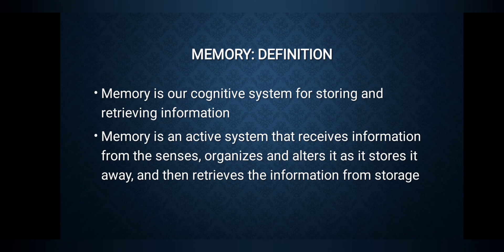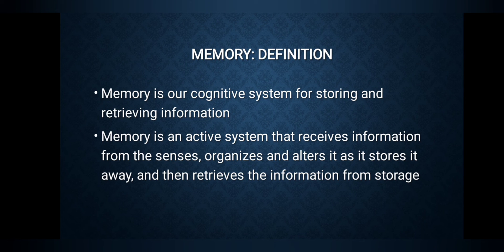Memory is our cognitive system for storing and retrieving information. It is an active system that receives information from the senses, organizes and alters it as it stores it away, and then retrieves the information from storage. We receive information from the sensory receptors and sensations, organize it, and store it in our brain as an active system.